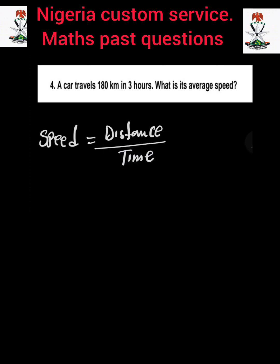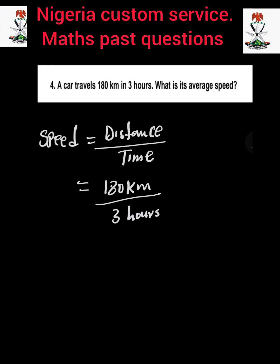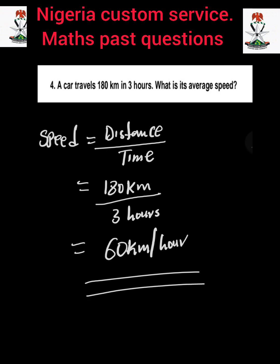All we need to do is direct substitution. The distance the car covers in three hours is 180 kilometers, so the distance is 180 kilometers divided by the time of 3 hours. 180 divided by 3 gives us 60 kilometers per hour. That is the answer: 60 kilometers per hour.